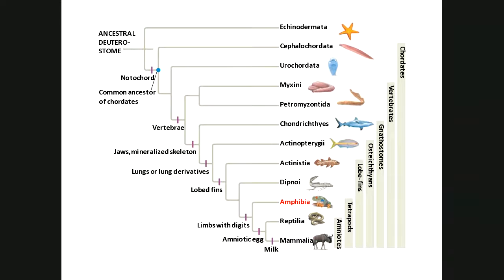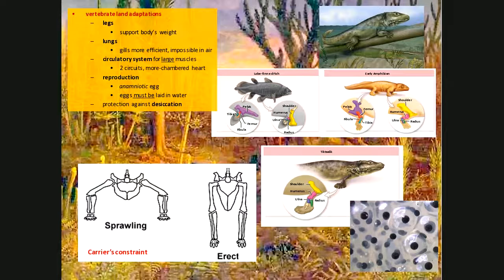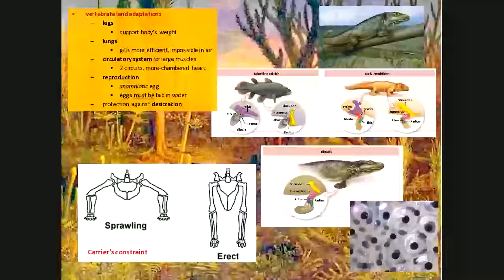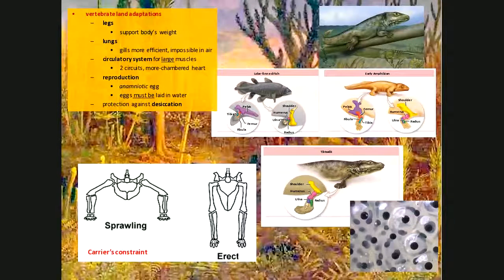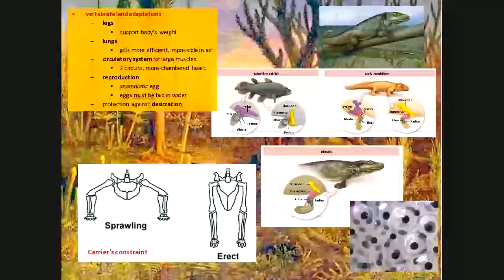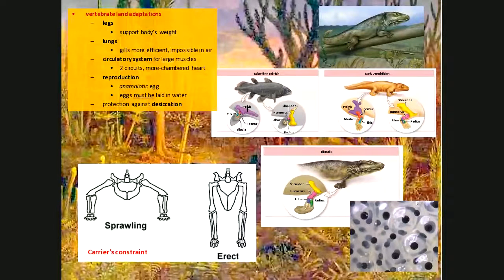That's where Ichthyostega comes in — the early amphibian shown in the upper right. Take that picture of the lobe-finned fish, then Tiktaalik, then the early amphibian — they're in order. Tiktaalik fits in between those two. Remember, there are many other gradations between them; many other species arose. It wasn't just lobe-finned fish, Tiktaalik, and early amphibians — those are just the highlights we're seeing in the fossil record.